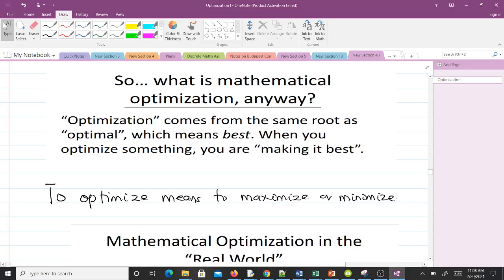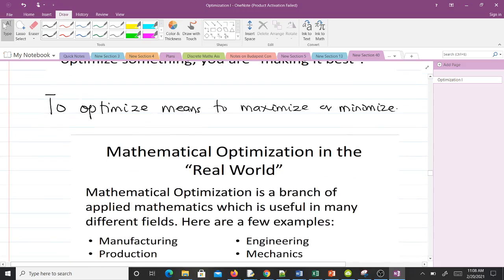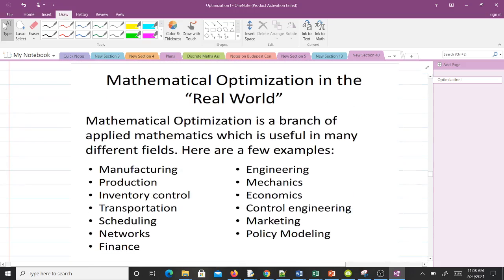Depending on what we want to optimize, we can maximize it or minimize it. For instance, if we are optimizing profits, then we want to maximize it. If we are optimizing loss, we want to minimize it.